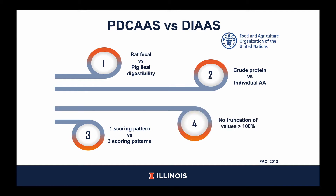Lastly, DIAAS no longer requires values greater than 100 to be truncated. This enables the identification of complementary proteins, which I will give an example of later on in this presentation, as well as the determination of DIAAS for mixed diets.